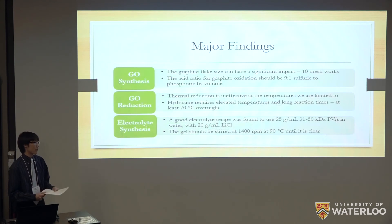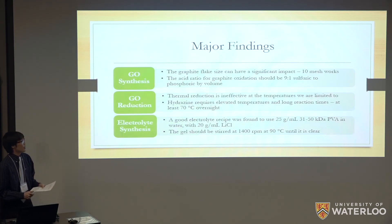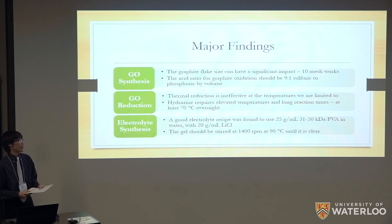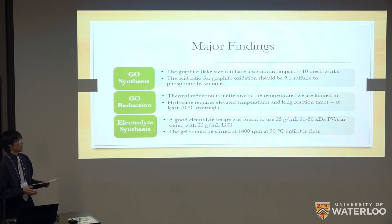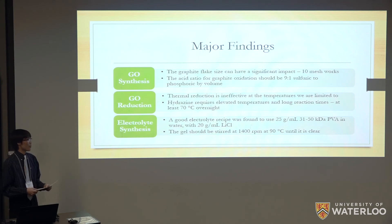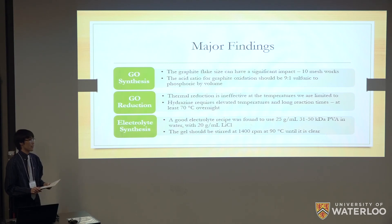The major findings we can extract are: the ideal graphite flake size for our GO synthesis is 10 mesh, and the acid ratio for graphite oxidation should be 9:1 sulfuric to phosphoric acid by volume. For the GO reduction method, thermal reduction was ineffective at temperatures we are limited to even across multiple days, and hydrazine, although somewhat effective, requires elevated temperatures and longer reaction times — at least 70 degrees overnight if not more. For the electrolyte synthesis, our electrolyte performed well, and using the recipe we developed, we should get a good gel with good resistivity and good ion diffusivity.